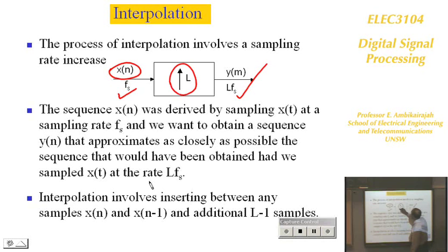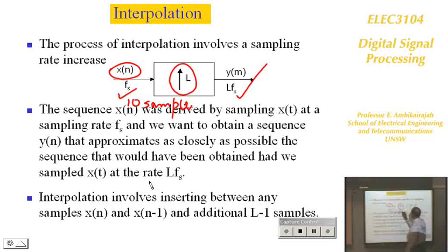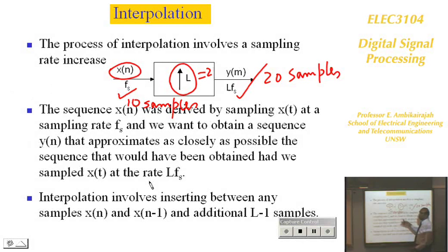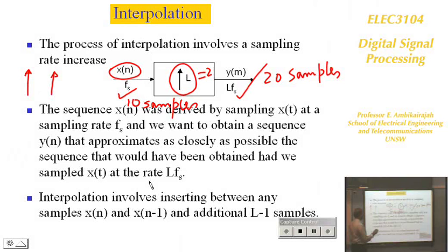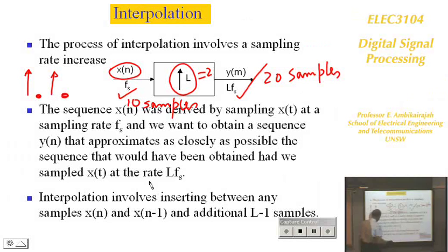How do you increase the sampling rate? If you start with 10 samples and L equals 2, you must end up with 20 samples. Decreasing samples is easy — just throw some out. But increasing samples is not straightforward. The trick is: between each pair of samples, insert L minus 1 zeros.